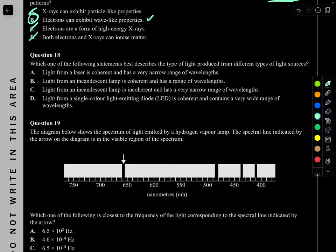Question 18. Which statement best describes light from different sources? A: light from a laser is coherent and has a very narrow wavelength range — true. B: light from an incandescent light is coherent — no, it's incoherent. C: incandescent light is incoherent with a narrow wavelength range — no, it has a wide range. D: a single-color LED is coherent with a wide wavelength range — no, it has a narrow range. A is the answer.